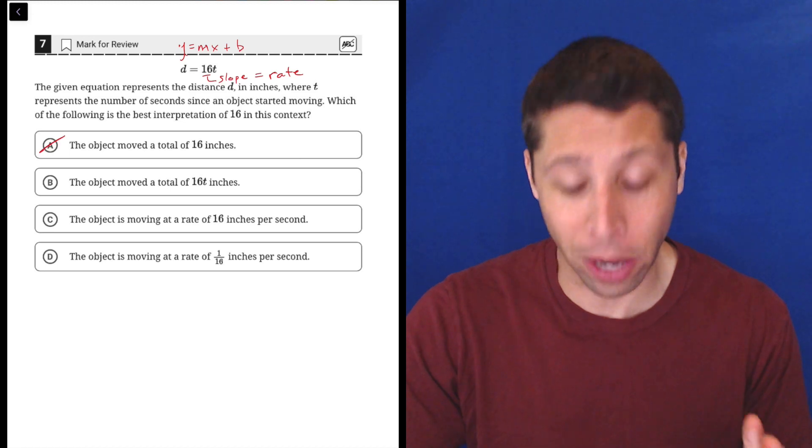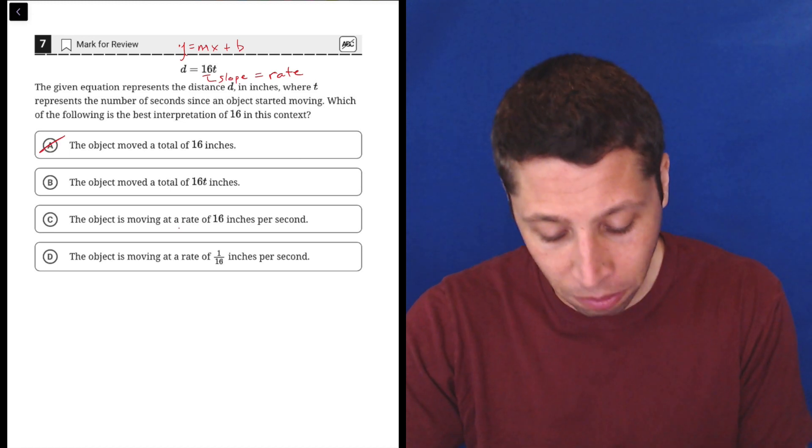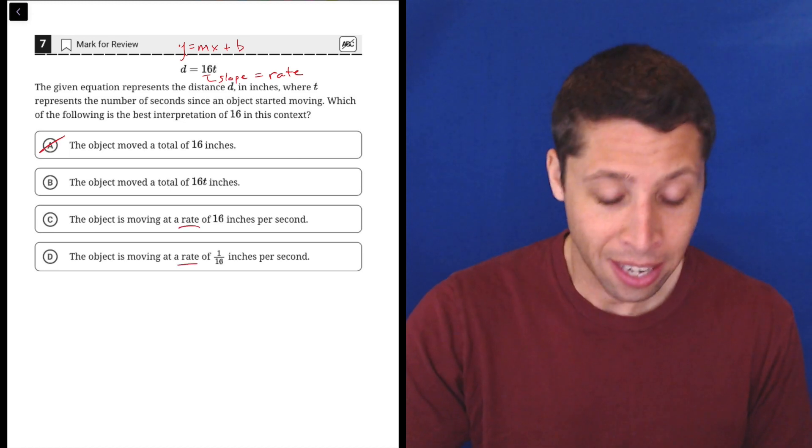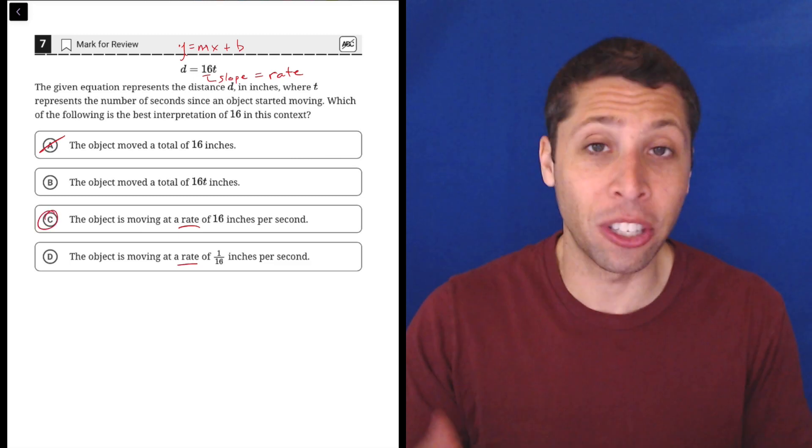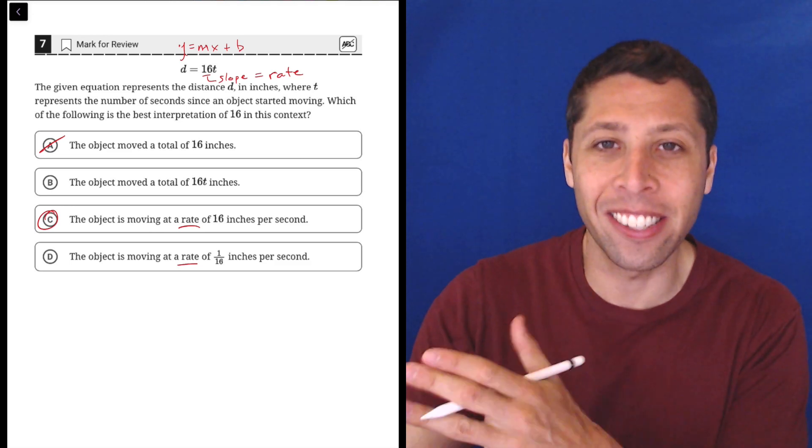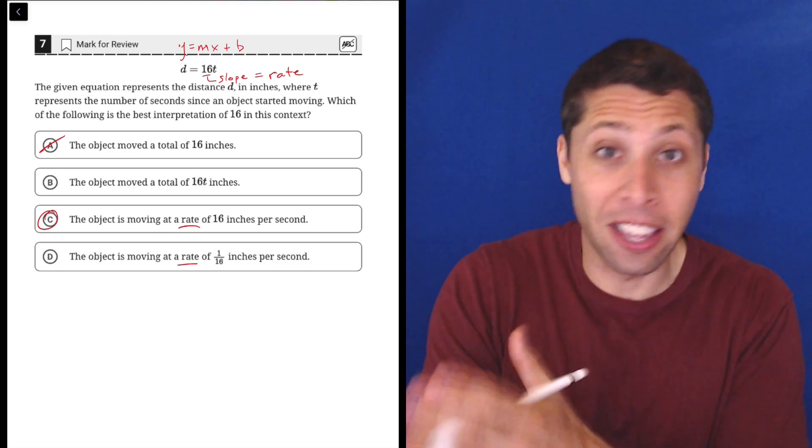I'm gonna skip choice B for now because I think that's kind of annoying, but let's look at C and D which conveniently use the word rate. If you were between these two because you're like 'oh that looks like a slope,' well then hopefully you would pick C.